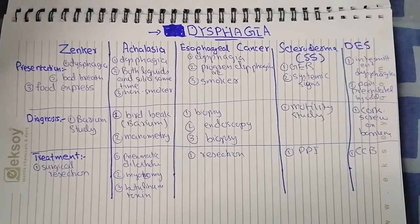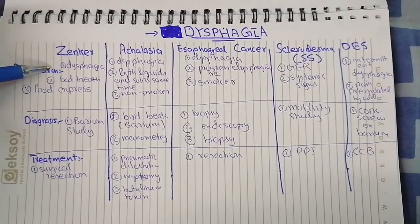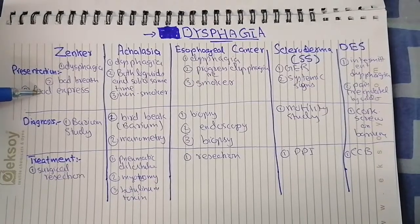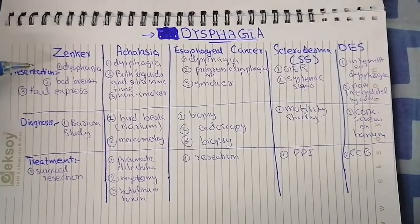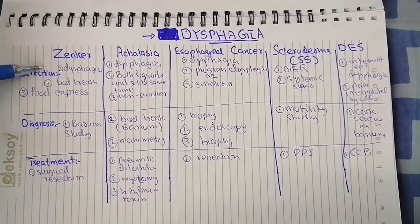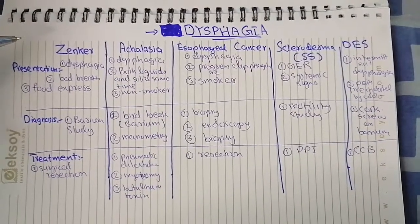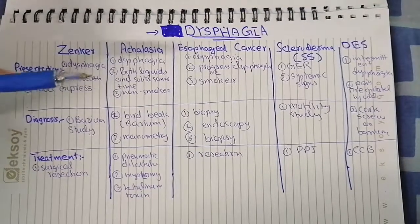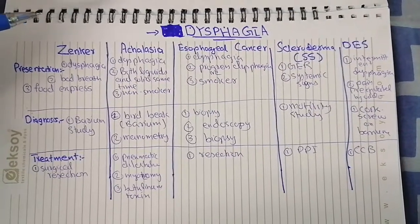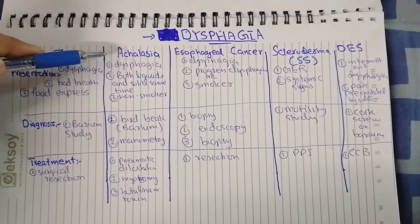Zenker's diverticulum is basically an outpouching in the posterior pharyngeal constrictor muscle. It presents with dysphagia, bad breath, and food expressed when you press on the throat. This is a very important sign — Zenker's presents with bad breath in addition to dysphagia, and food is expressed when you apply force on the throat.